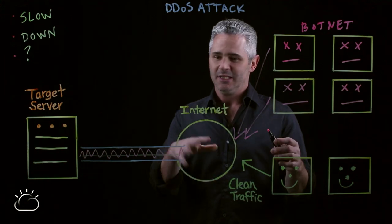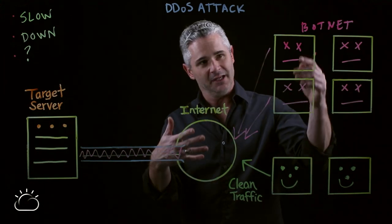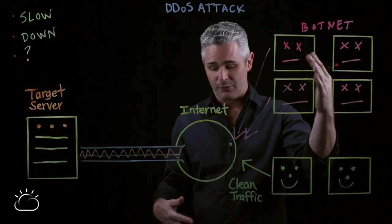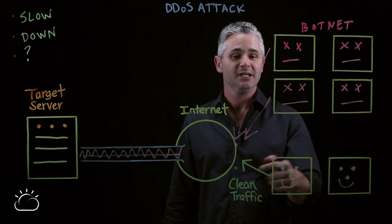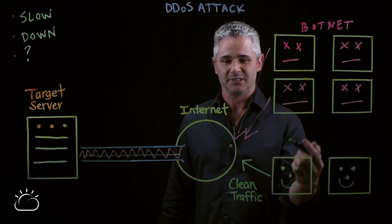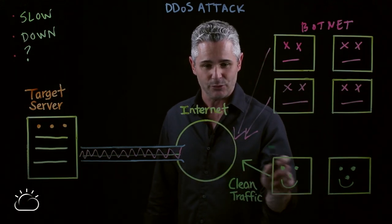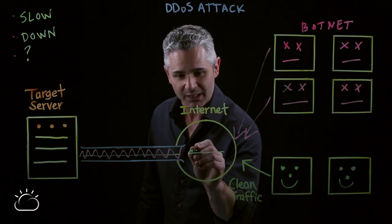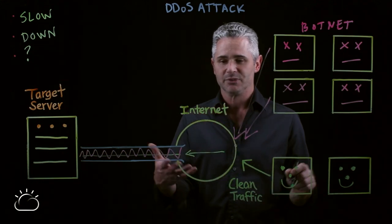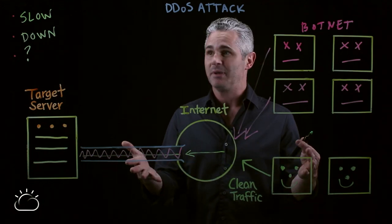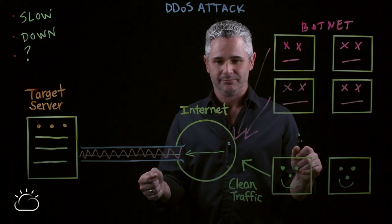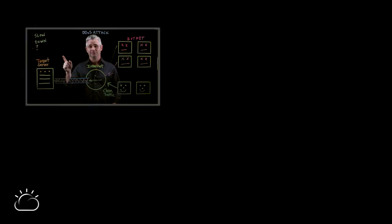What ends up happening is we create congestion through this pipe coming from the internet to the target server. As this congestion is occurring and never stops, they've created so much congestion and the botnet continues to execute, while internet users keep attempting to come in — however the pipe is so congested that they can no longer enter the roadway. This is the basics of a DDoS attack. If your application is slow, you're experiencing downtime, or just other odd behavior, you might be under a DDoS.